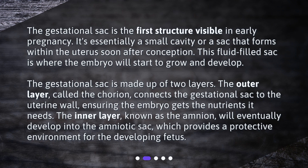The gestational sac is made up of two layers. The outer layer, called the chorion, connects the gestational sac to the uterine wall, ensuring the embryo gets the nutrients it needs. The inner layer, known as the amnion, will eventually develop into the amniotic sac, which provides a protective environment for the developing fetus.